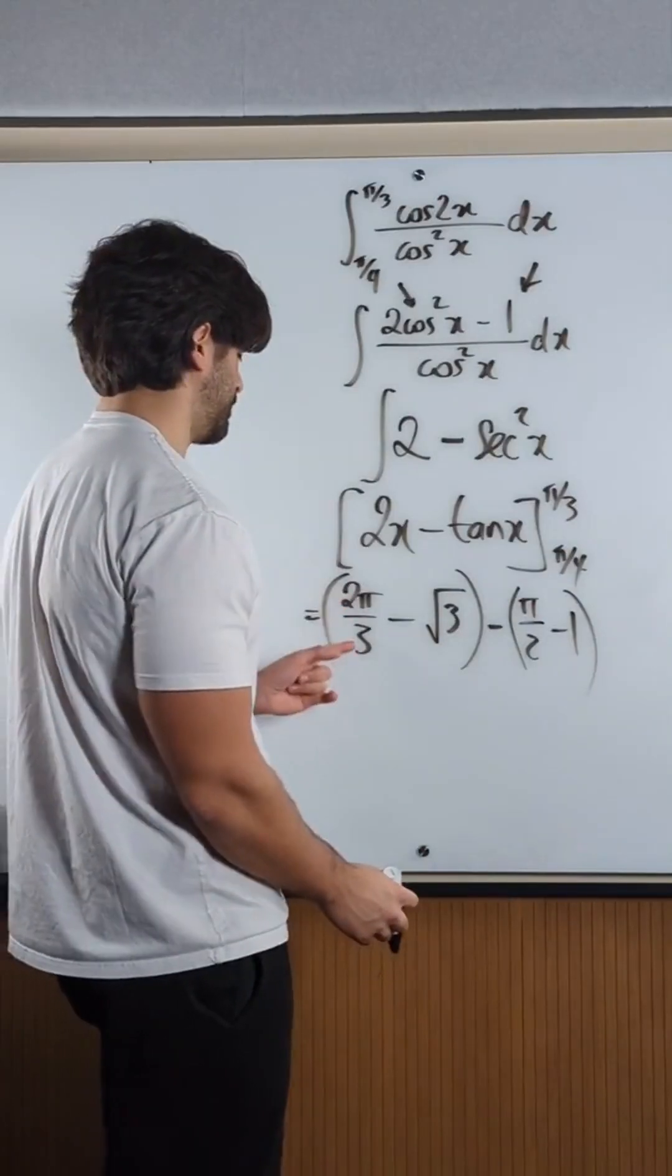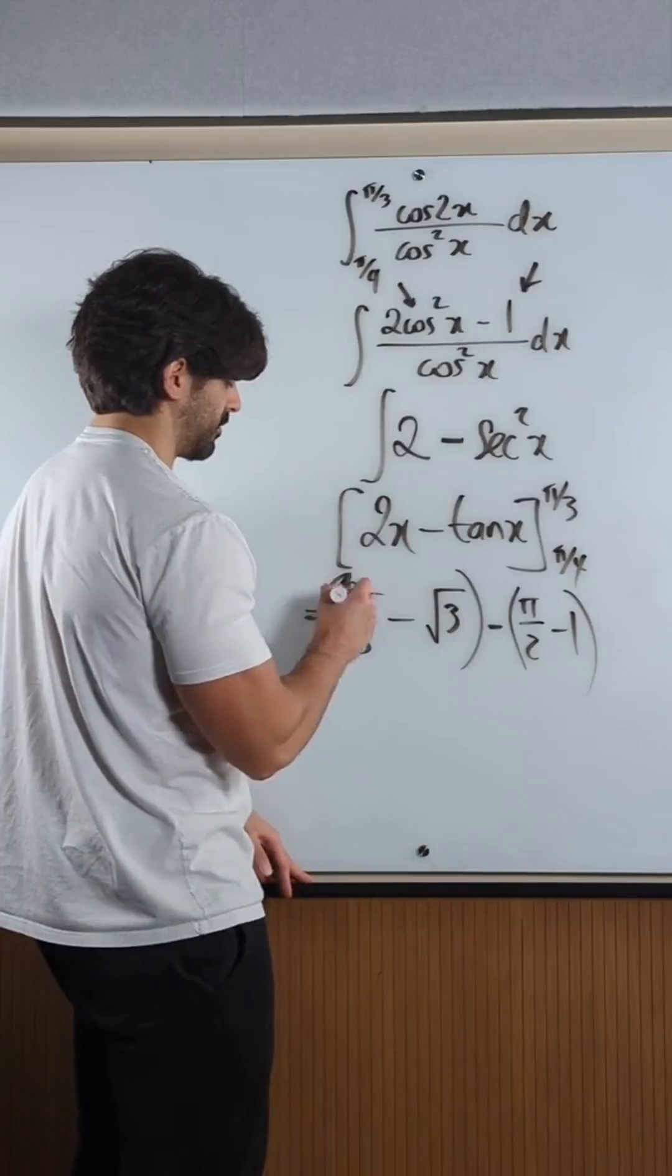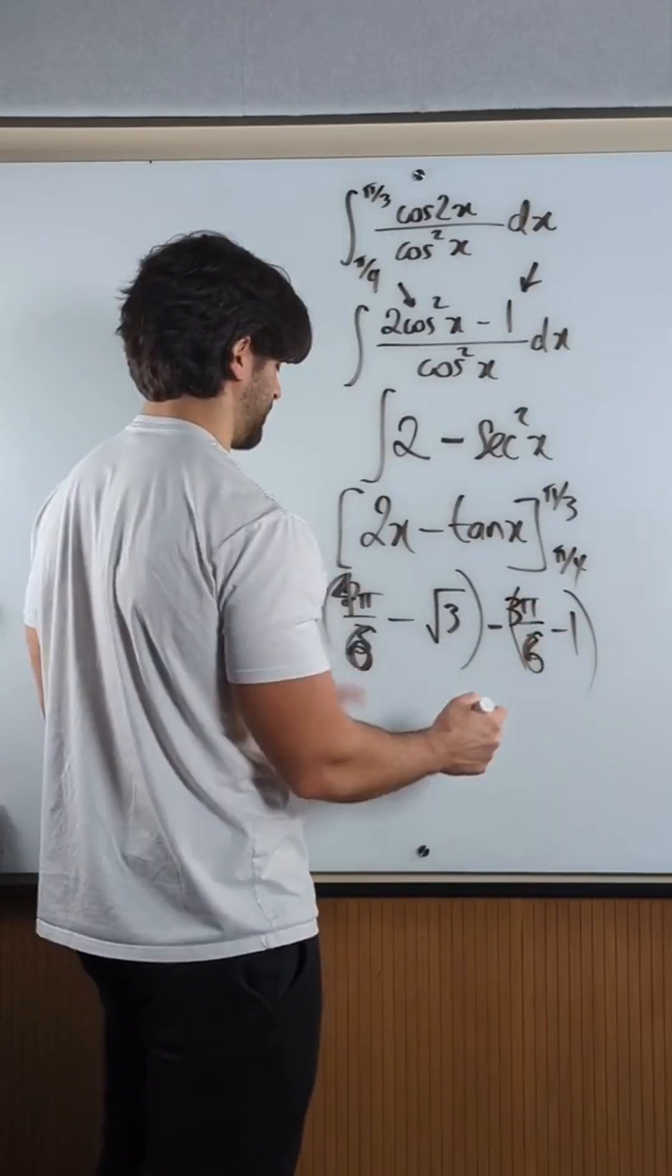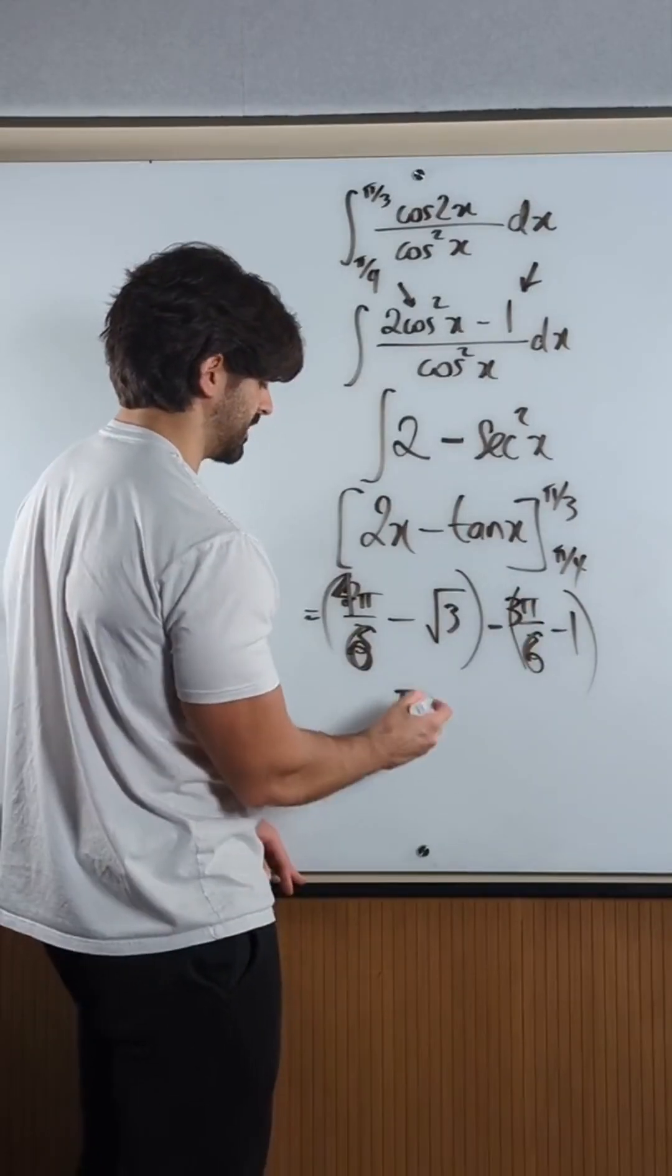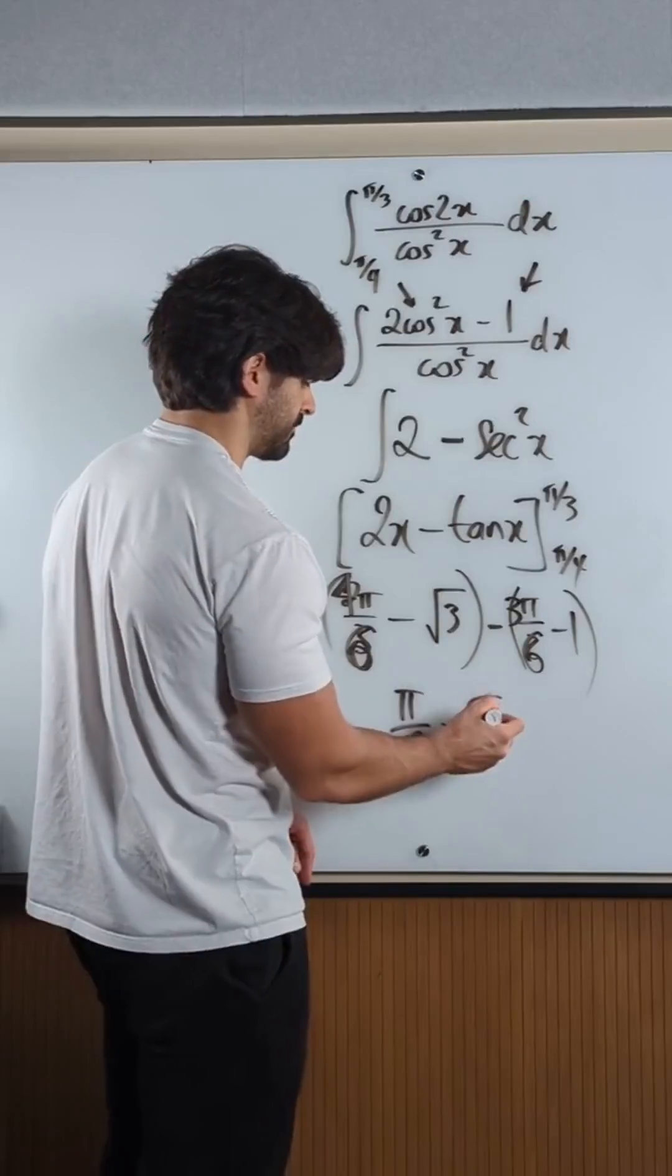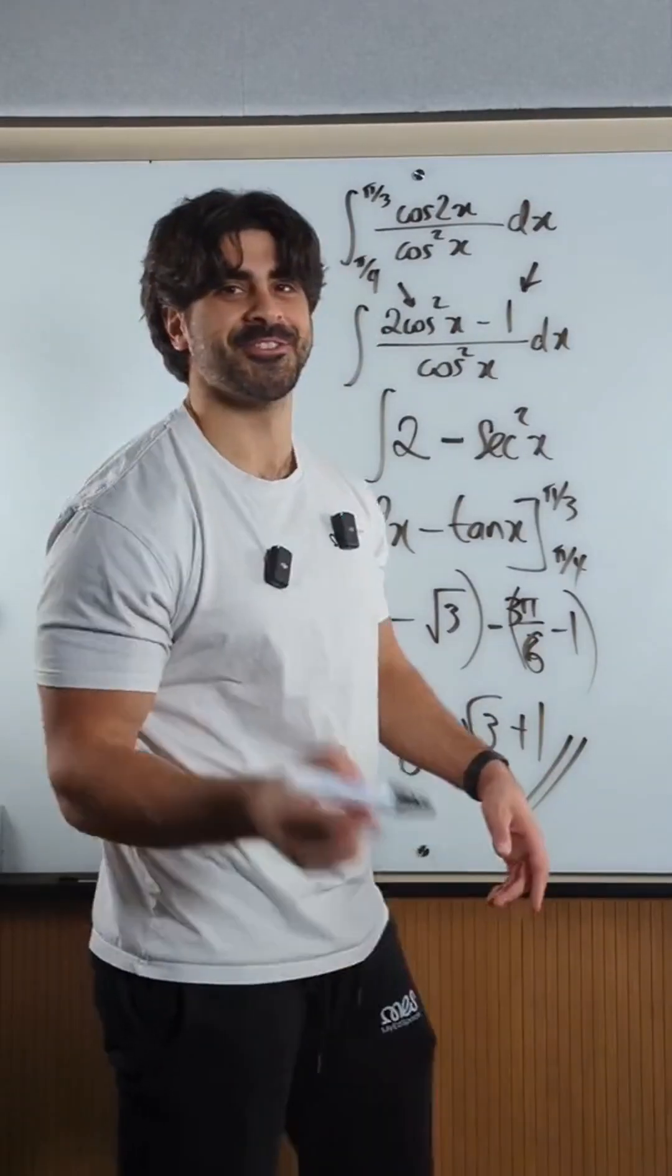So we've got 2 pi over 3 minus pi over 2. Let's write over 6. So 4 over 6. What is that? 3 over 6. 4 pi minus 3 pi. So we have pi over 6, minus root 3, plus 1. Easy one mark question. Nice.